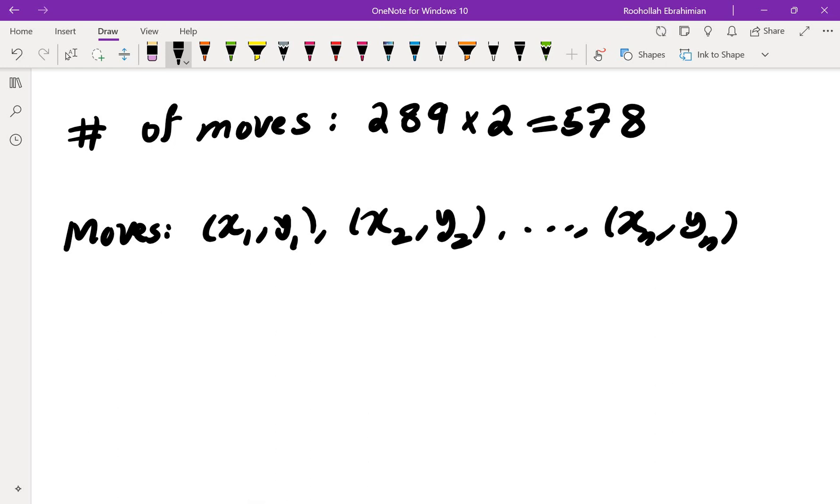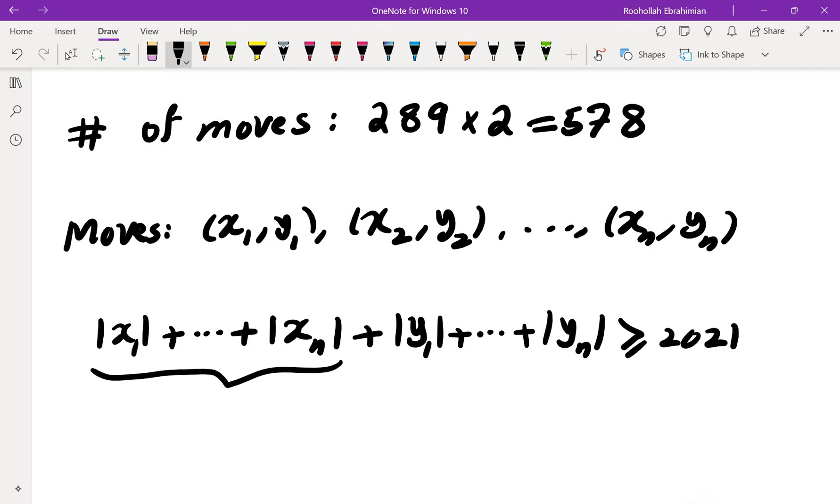If we look at the sum of the moves in the x direction, the sum would be |x₁| all the way to |xₙ|, and the sum of moves in the y direction is |y₁| all the way to |yₙ|. The total moves in the x direction is 2021, and we also have 2021 moves in the y direction.